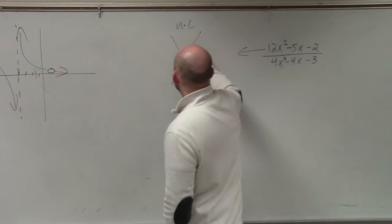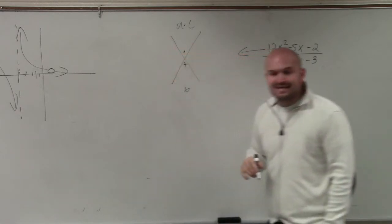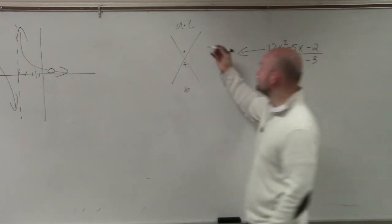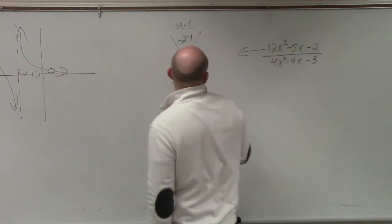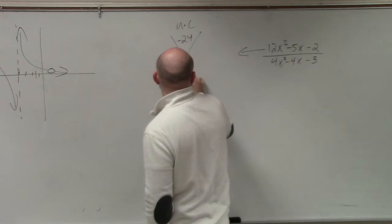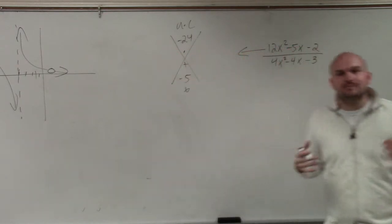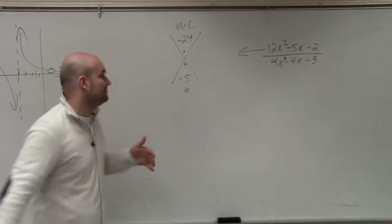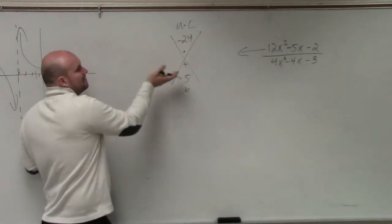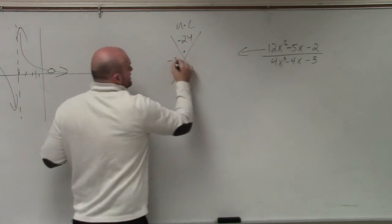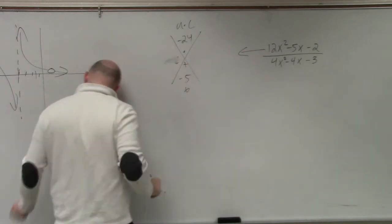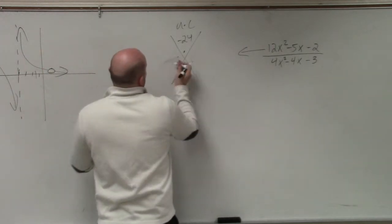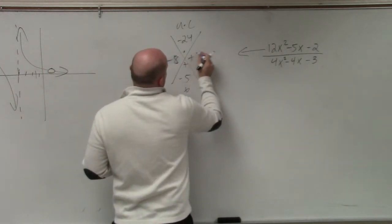So again, you do the same thing. In this case though, ladies and gentlemen, A is not 1. So when we do A times C, we have 12 times 2, which is negative 24. And we have B, which is negative 5. So again, we want to determine the factors that multiply to give us negative 24, but then add to give us negative 5. And you guys can figure those out. Let me do these different colors.